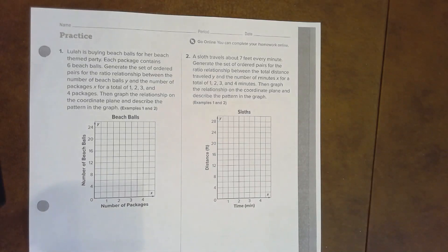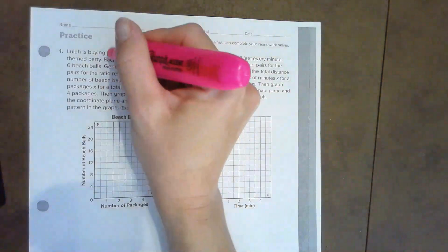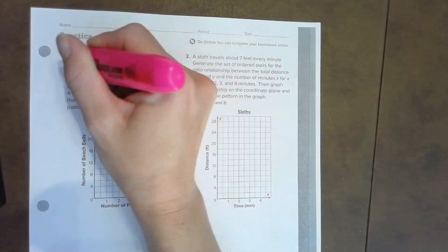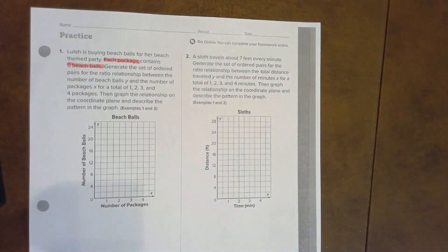In this video we're on lesson 1.3 practice problems on page 27 in our workbook. Lola is buying beach balls for her beach theme party. Each package contains six beach balls. Let's highlight that: each package, six beach balls. Generate the set of ordered pairs for the ratio relationship between the beach balls and the packages for a total of four packages.